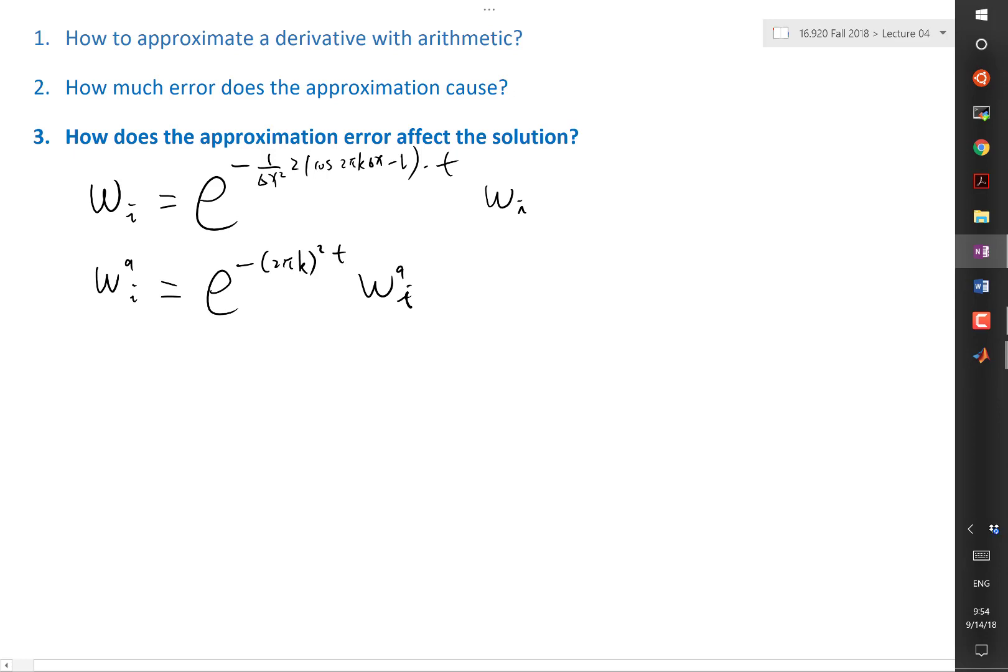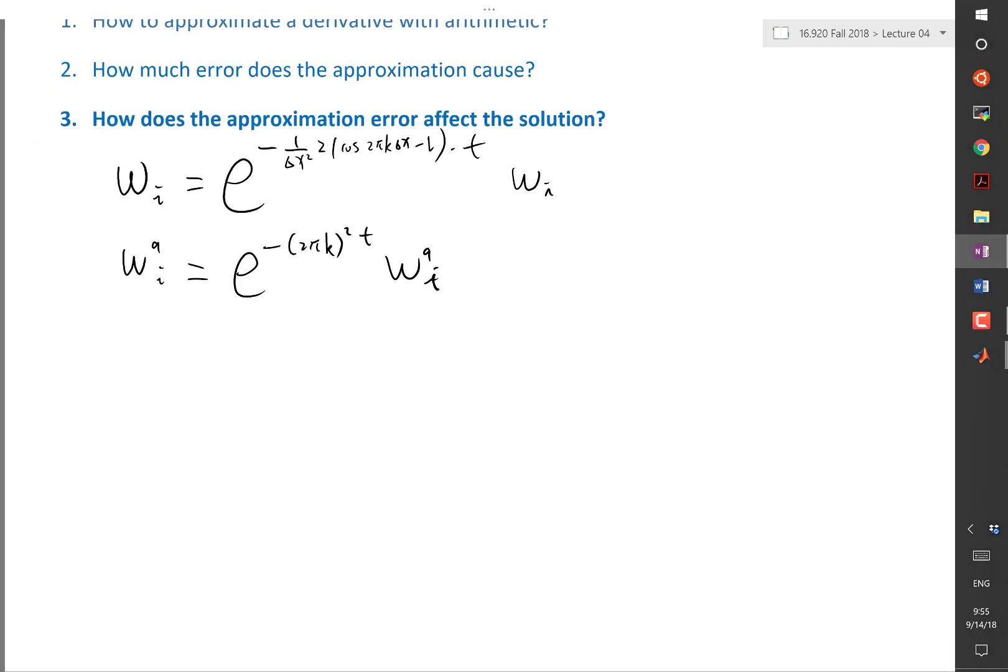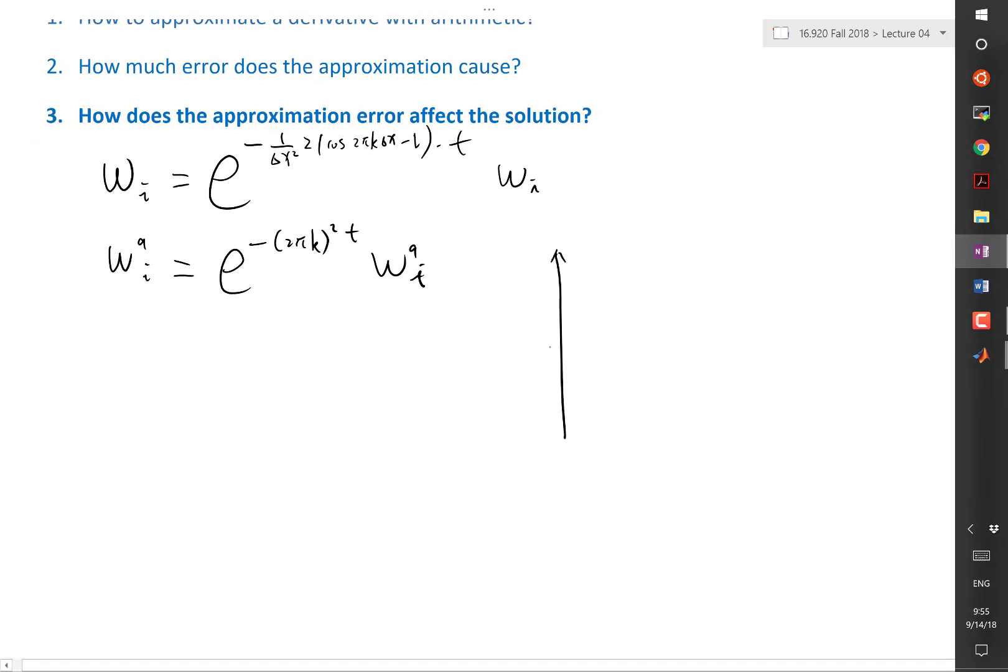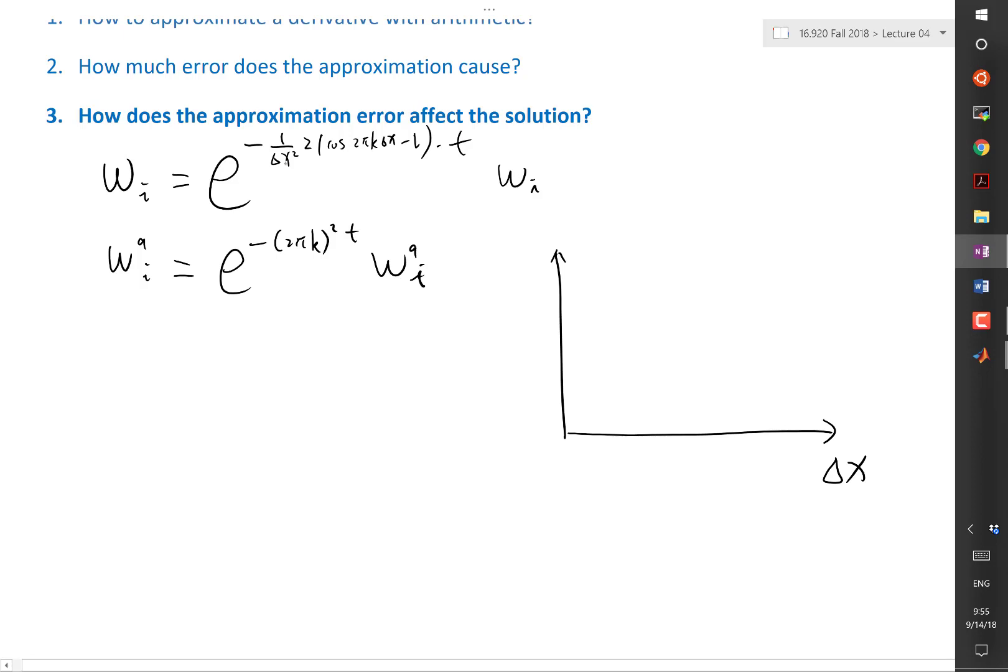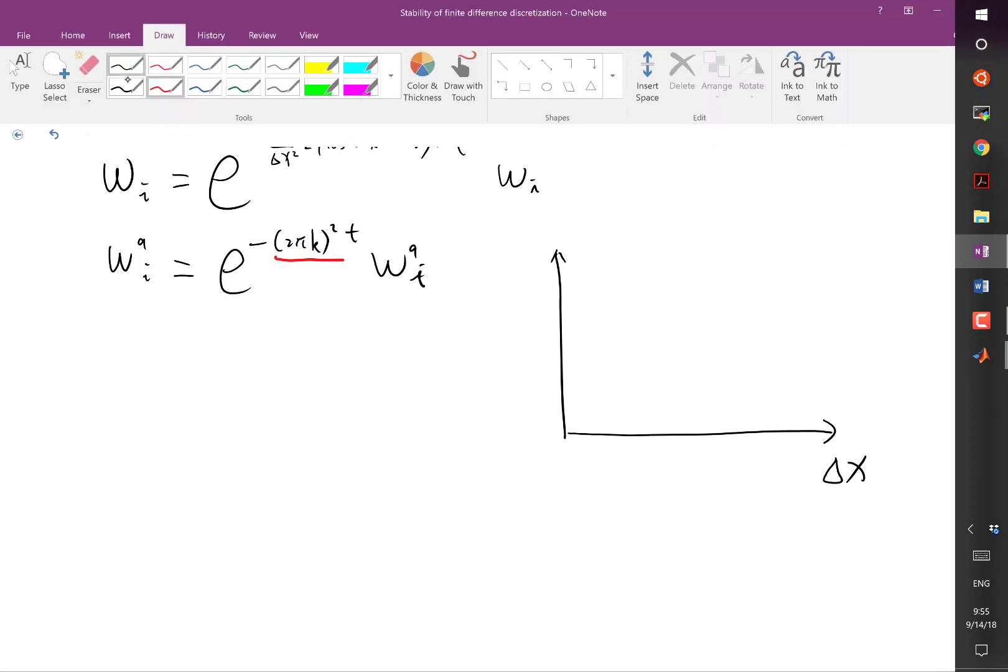So they both go exponential and the exponential rate of decay is different. But if I look at the exponential rate of decay as a function of delta x, as a function of delta x, let's use two colors to draw them. Oh sorry, not as a function of delta x, but as a function of k.